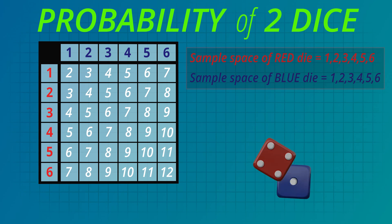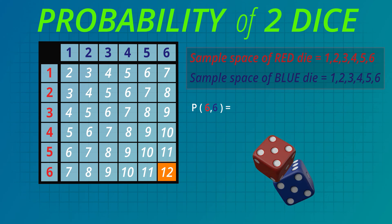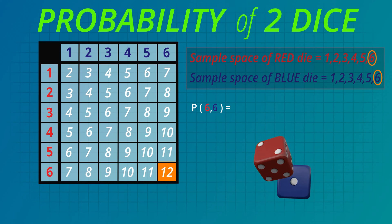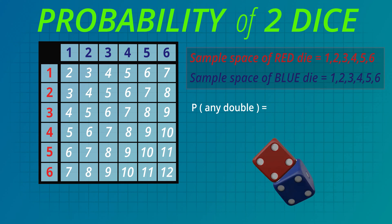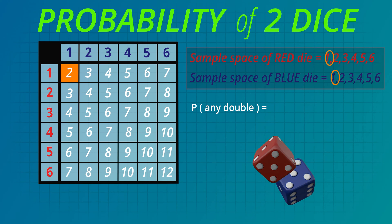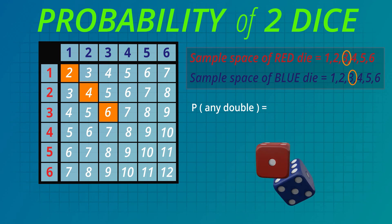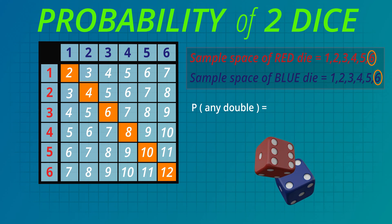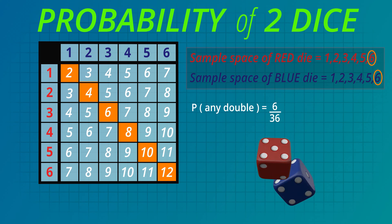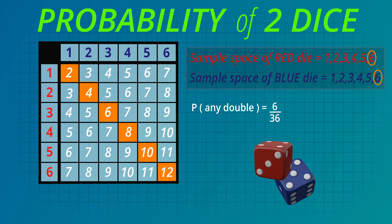Let's look at the probabilities of different events happening. What is the probability of tossing two sixes? That's 1 out of 36. What is the probability of tossing any double? The doubles are 1 and 1, 2 and 2, 3 and 3, 4 and 4, 5 and 5, or 6 and 6. That's six possible outcomes out of 36. We can divide the top and bottom numbers of this fraction to simplify it to one sixth.